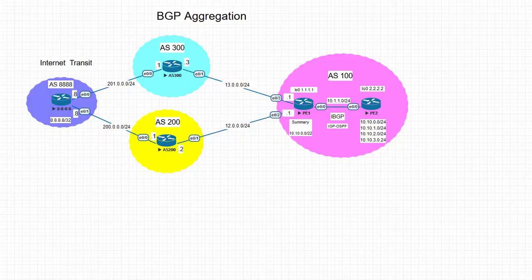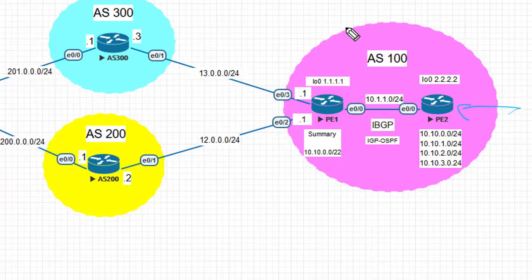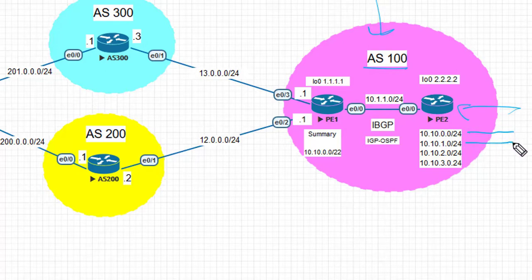Welcome back. Today we're going to take a look at BGP aggregation and also at some of the attributes like aggregator and atomic aggregate. First, let's look at the topology. We have AS 100, and within AS 100 we have PE2. PE2 is going to originate four slash 24 prefixes: 10.10.0.0/24, 10.10.1.0/24, 10.10.2.0/24, and 10.10.3.0/24.